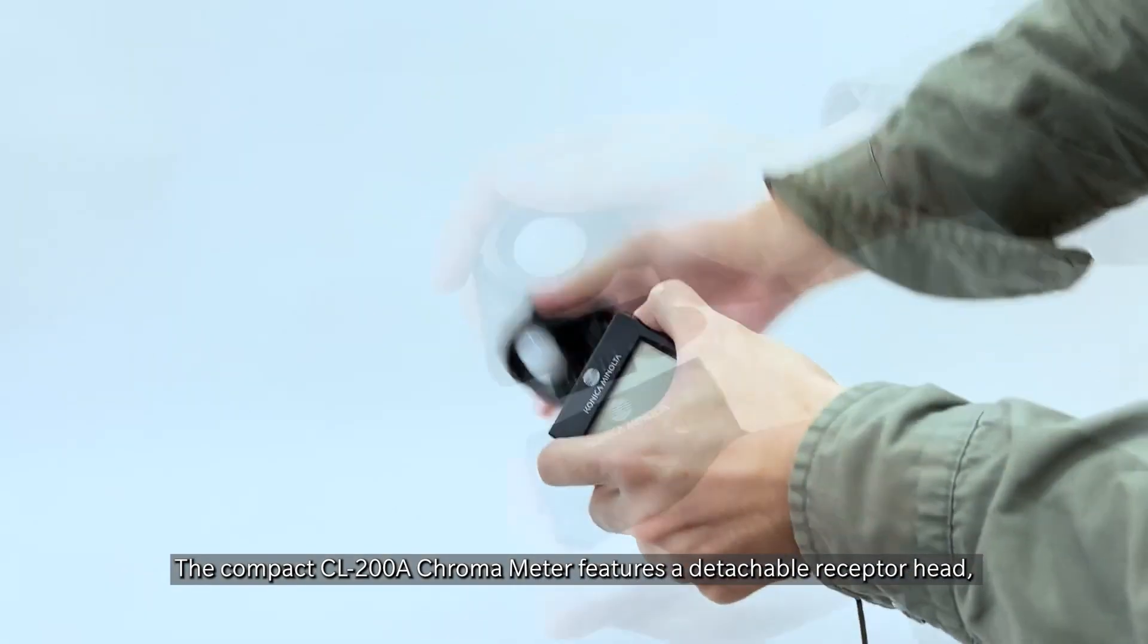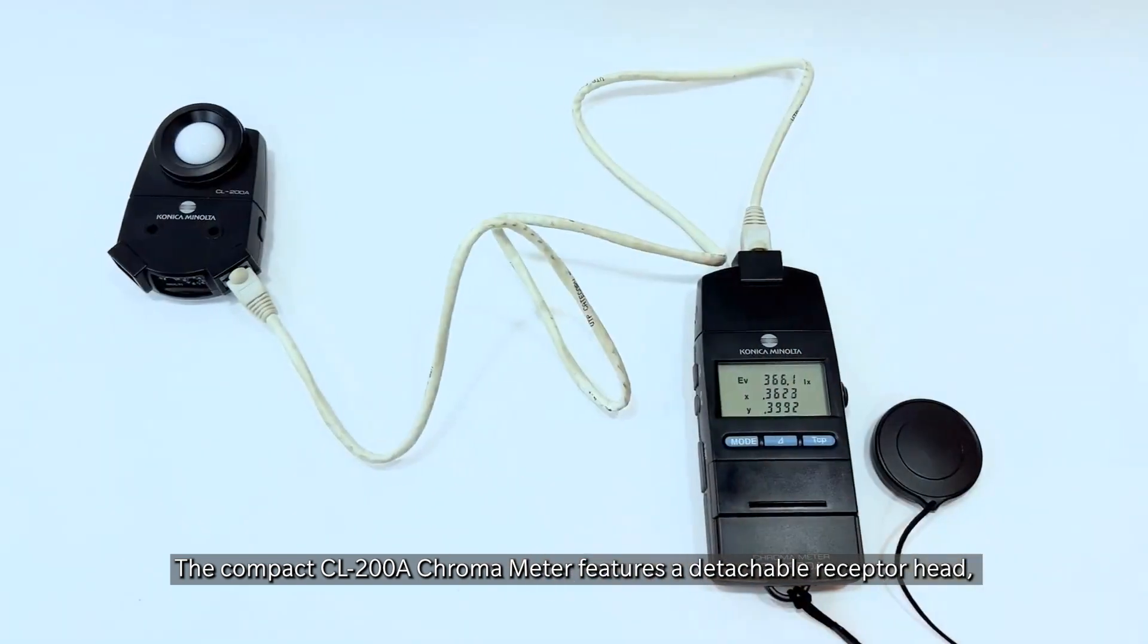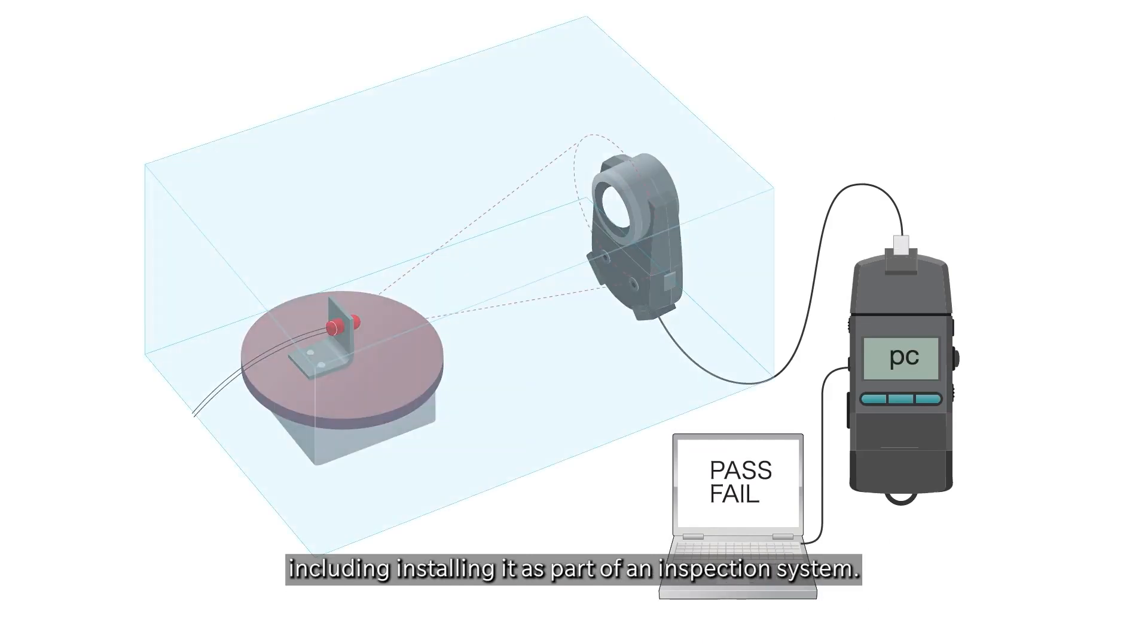The compact CL200A CHROMAMETER features a detachable receptor head, which allows for remote readings, including installing it as part of an inspection system.